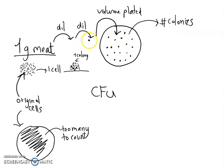I also reminded you that one cell, when it lands on a plate after multiple divisions, leads to one colony. All of these cells are basically clones of each other.